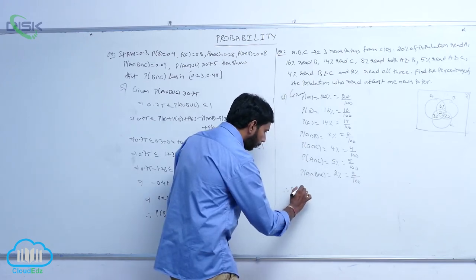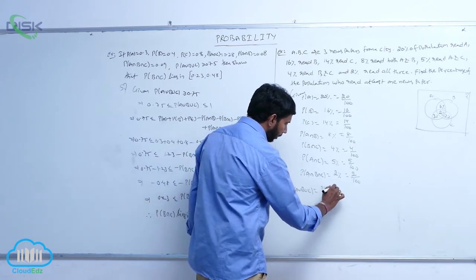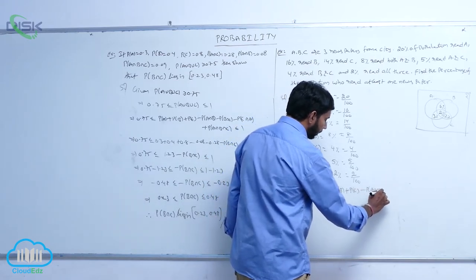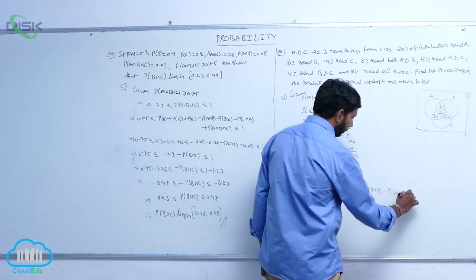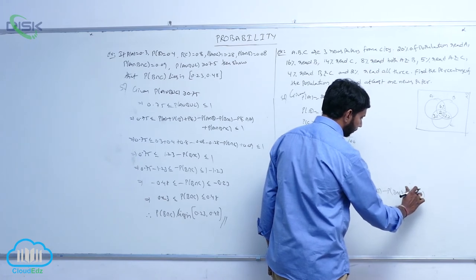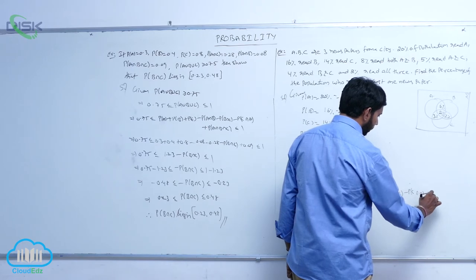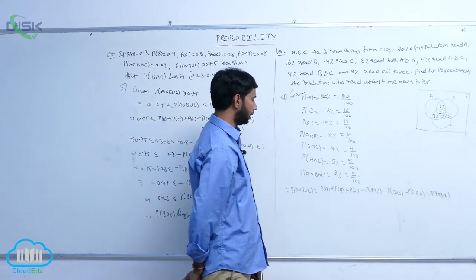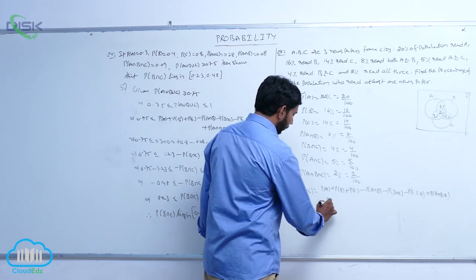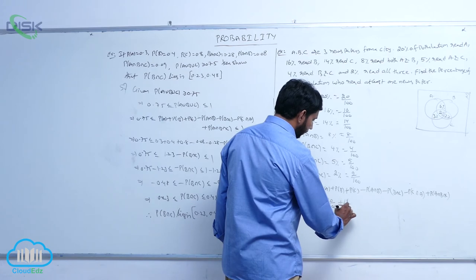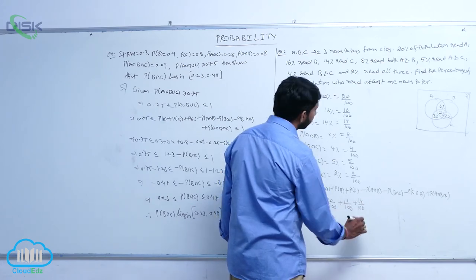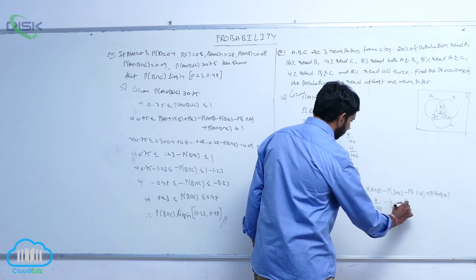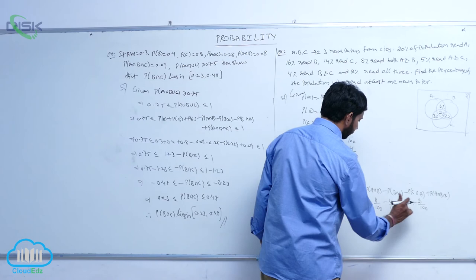Therefore, P(A∪B∪C) = P(A) + P(B) + P(C) − P(A∩B) − P(B∩C) − P(C∩A) + P(A∩B∩C). Substituting all values: 20/100 + 16/100 + 14/100 − 8/100 − 4/100 − 5/100 + 2/100.